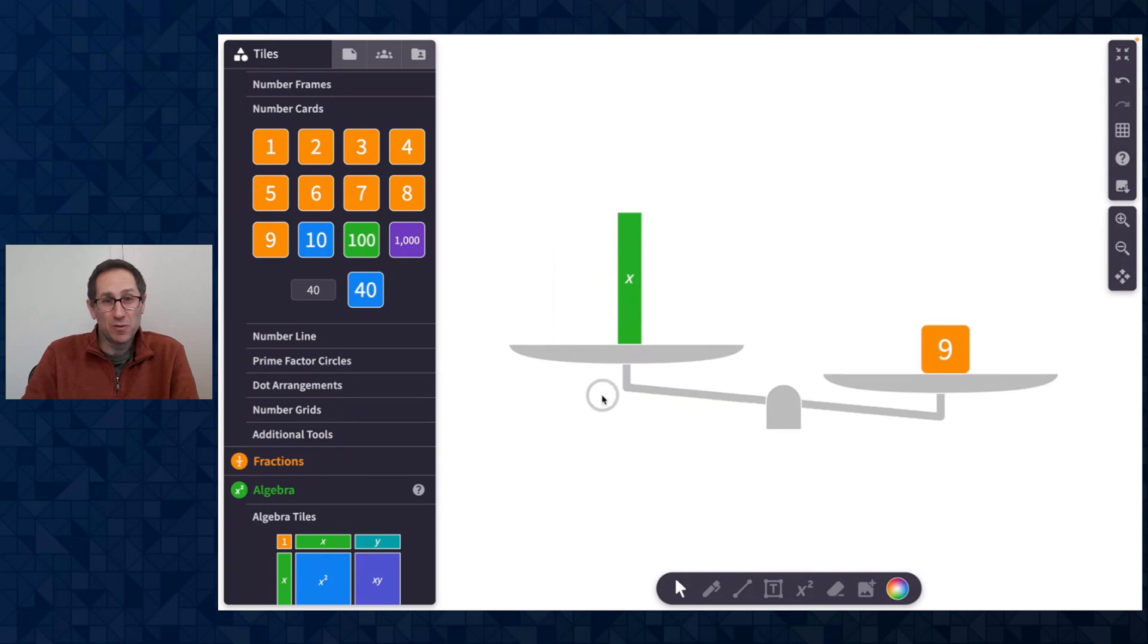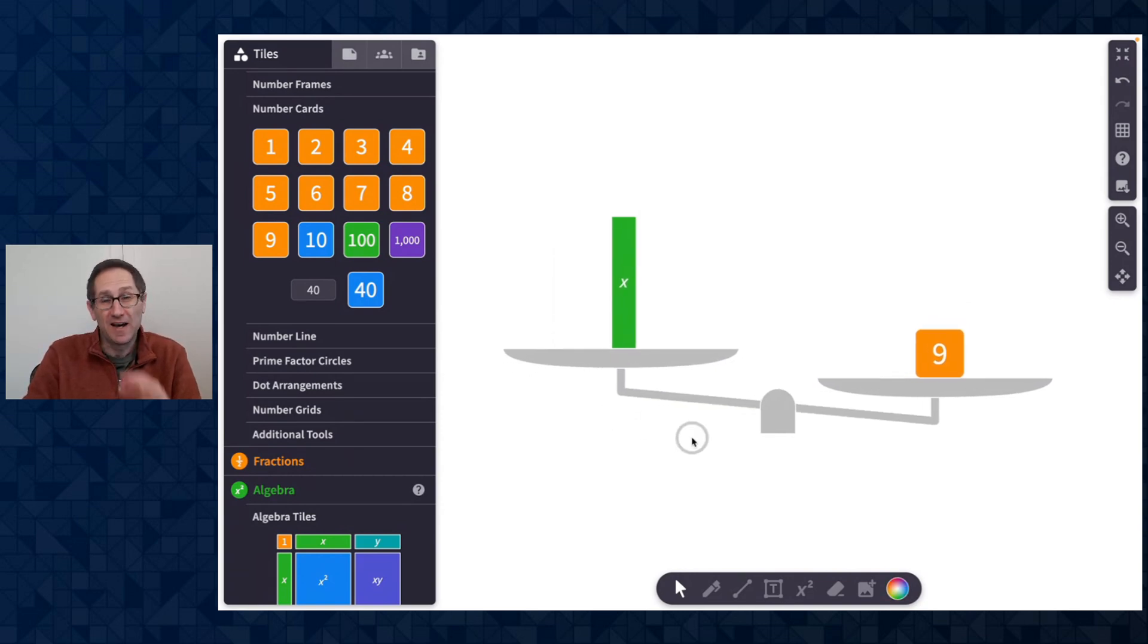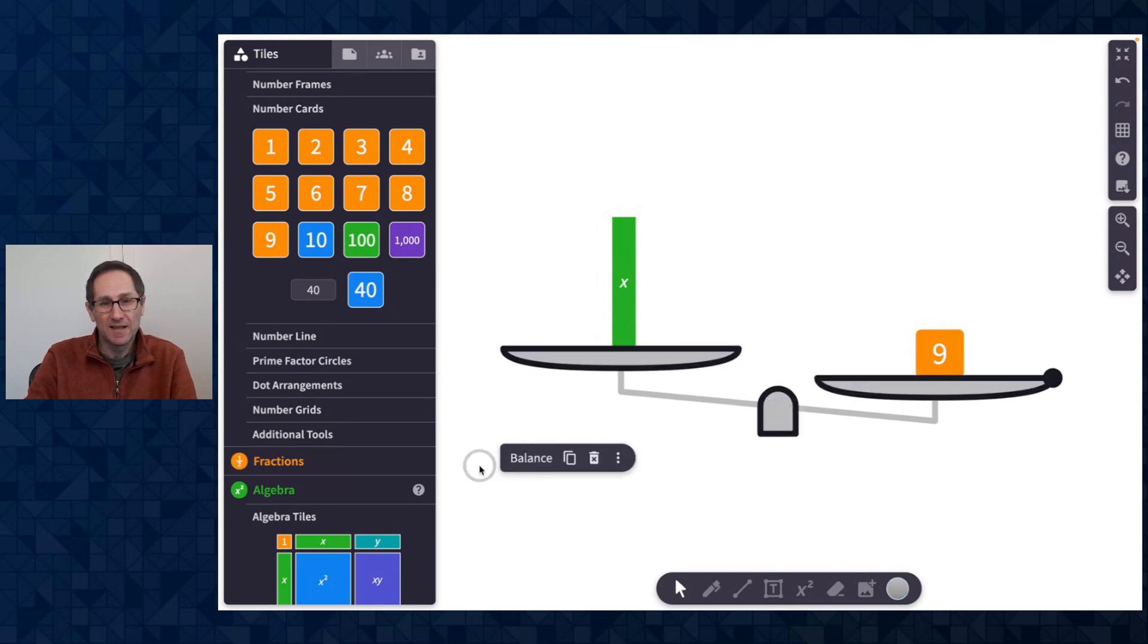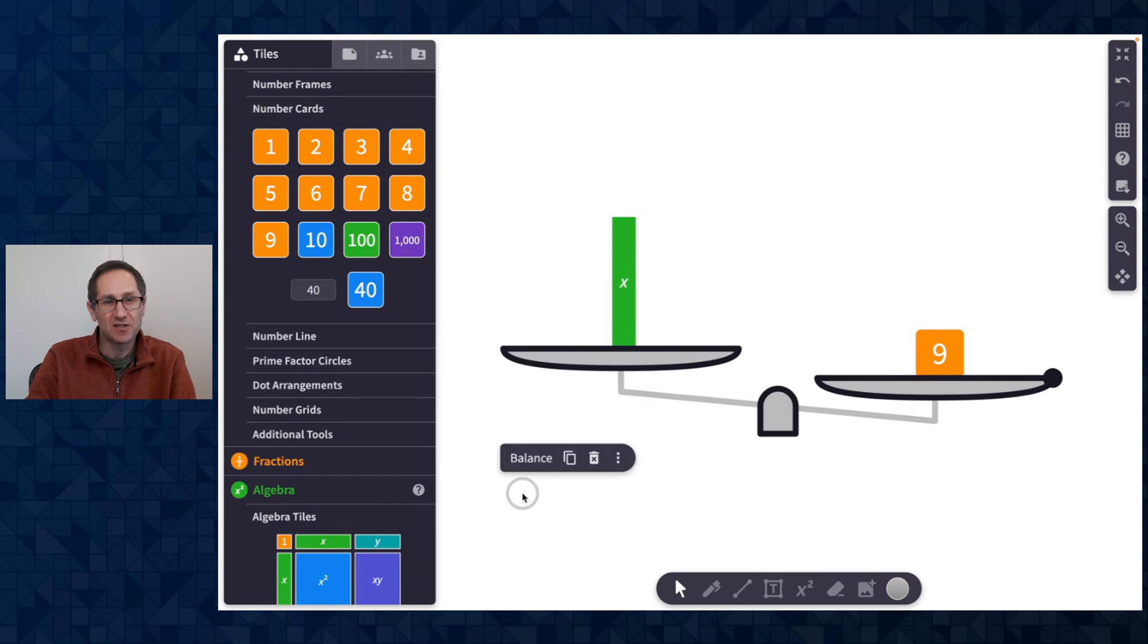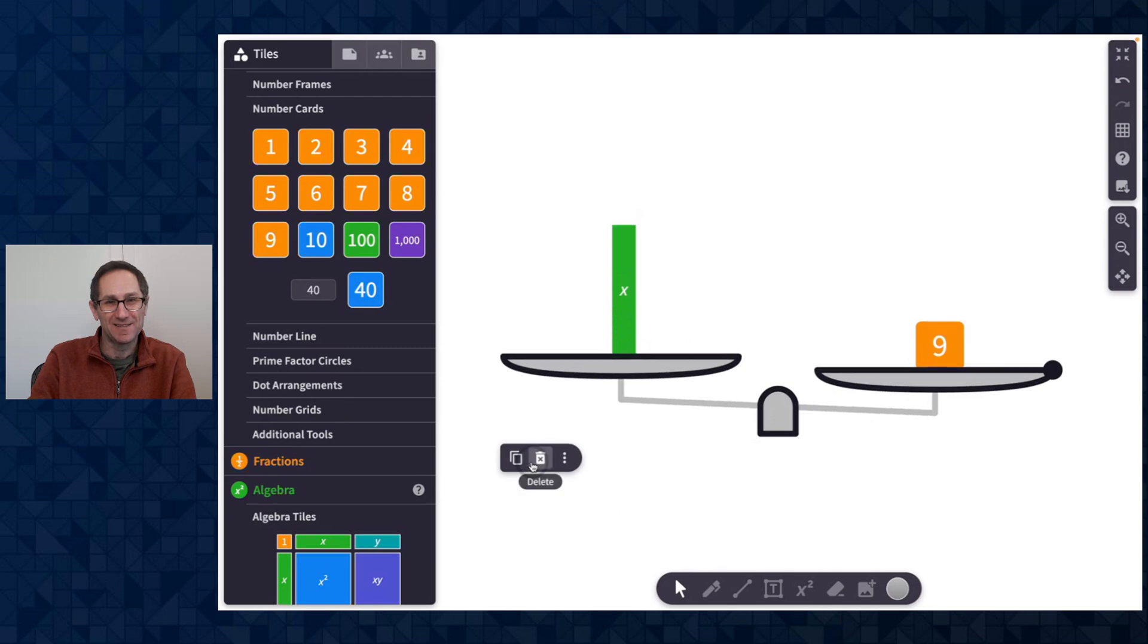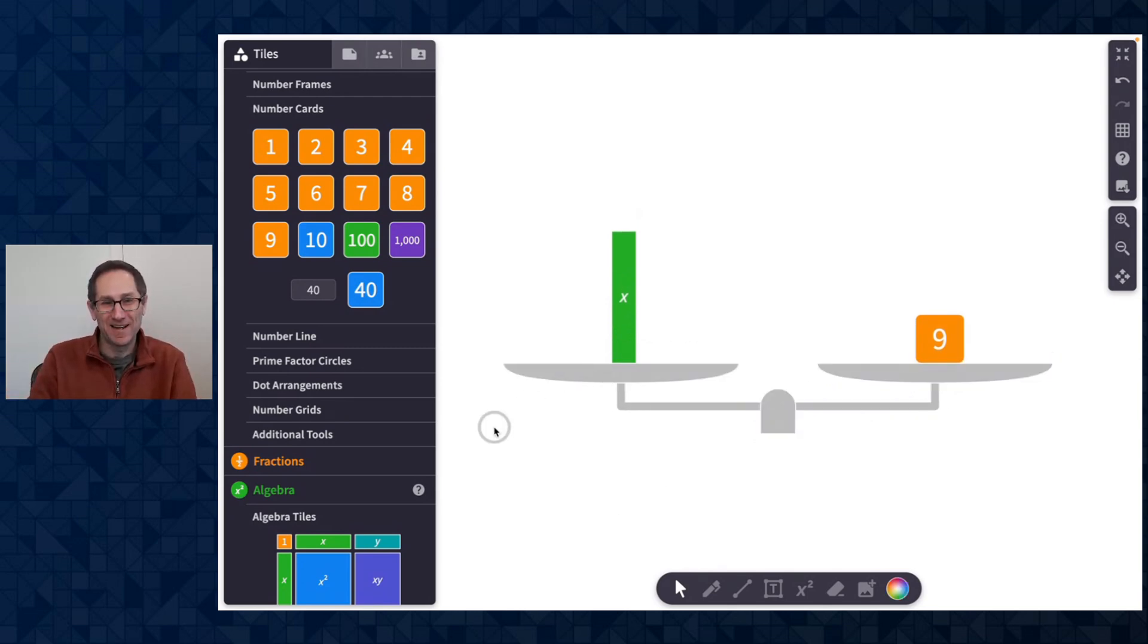But of course there are going to be times you want to change the value of an algebra tile from 5 to something else. So here I have X and 9. X is 5, so it's not balanced. But when I click on the Balance Scale, I get this option in the Action Bar to balance the scale. Again, that appears when you click on the Balance Scale. So I'm going to click right here and in the Action Bar is this Action of Balance. When you click Balance, Polypad is going to change the value of the X tile from 5 to whatever will balance the scale. Here it's pretty clear that if X is 9, it'll balance the scale. So watch what happens. I click Balance. The scale balances itself and now X is 9.